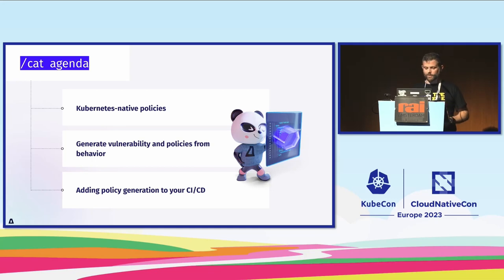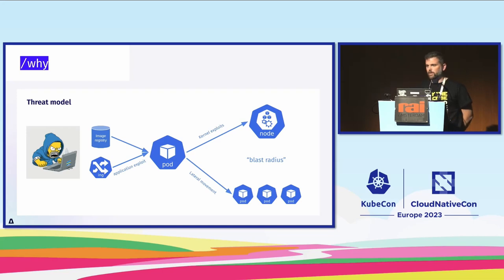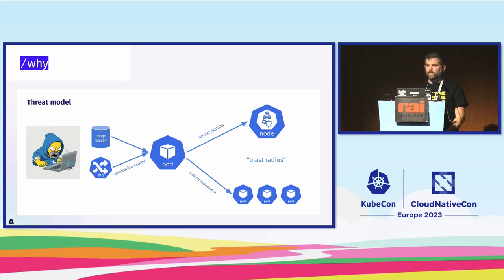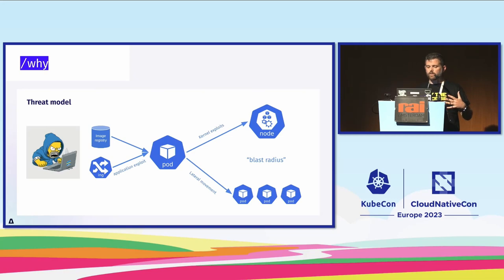Today's threat model is a very classical one around the Kubernetes cluster. Most of the time, pods can be accessed from the public internet either via a load balancer service or ingress, or an attacker may try to penetrate pods through supply chain or image registry. The first thing I'll show is the application exploit — your vulnerability posture in your workloads — and how you can decrease noise and focus on what really matters.